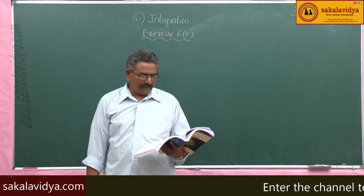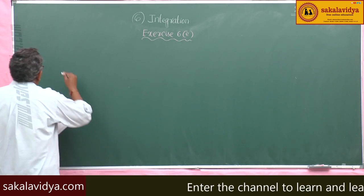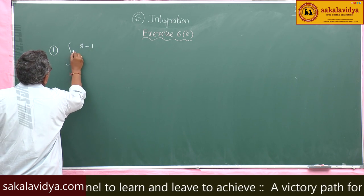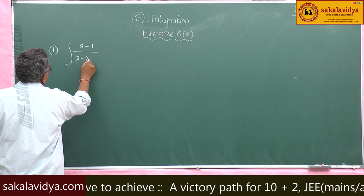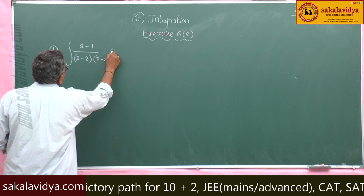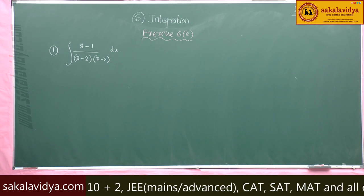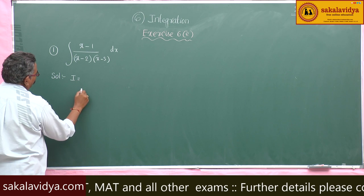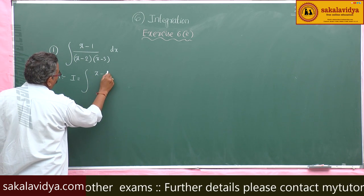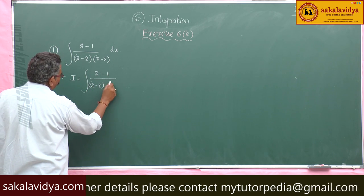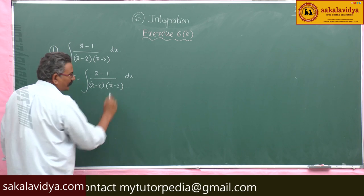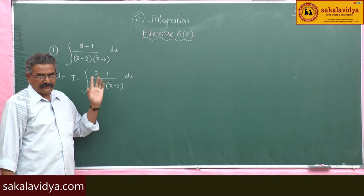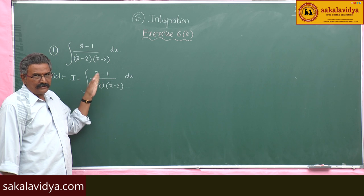Exercise 6C Problems. First one: evaluate integral of x minus 1 by x minus 2 into x minus 3 dx. Let us say I is equal to integral of x minus 1 by x minus 2 into x minus 3 dx. In order to find this integral, we have to first find the partial fractions of this function.